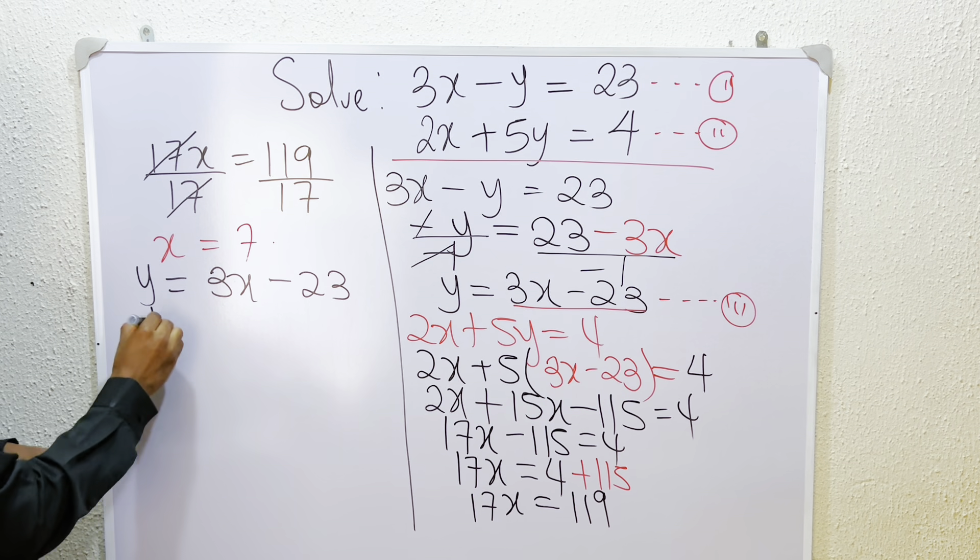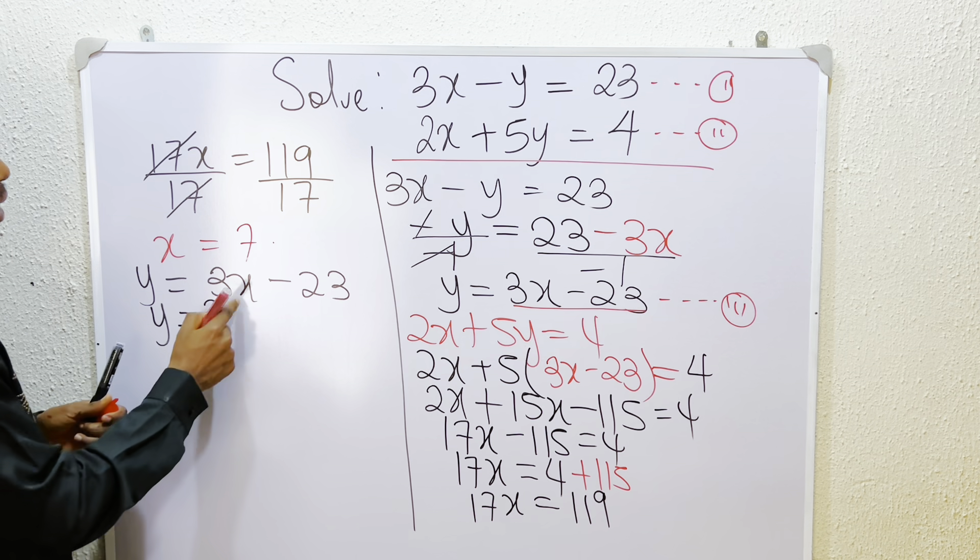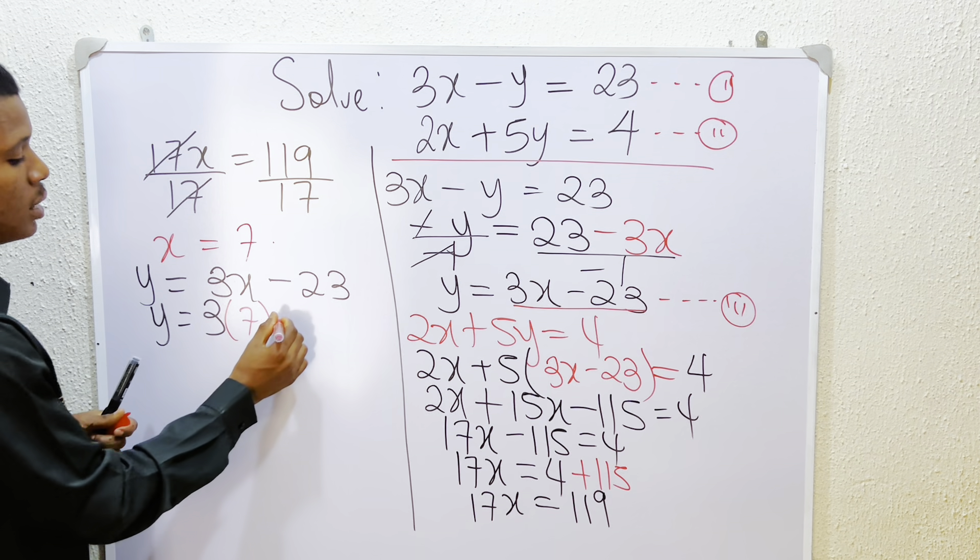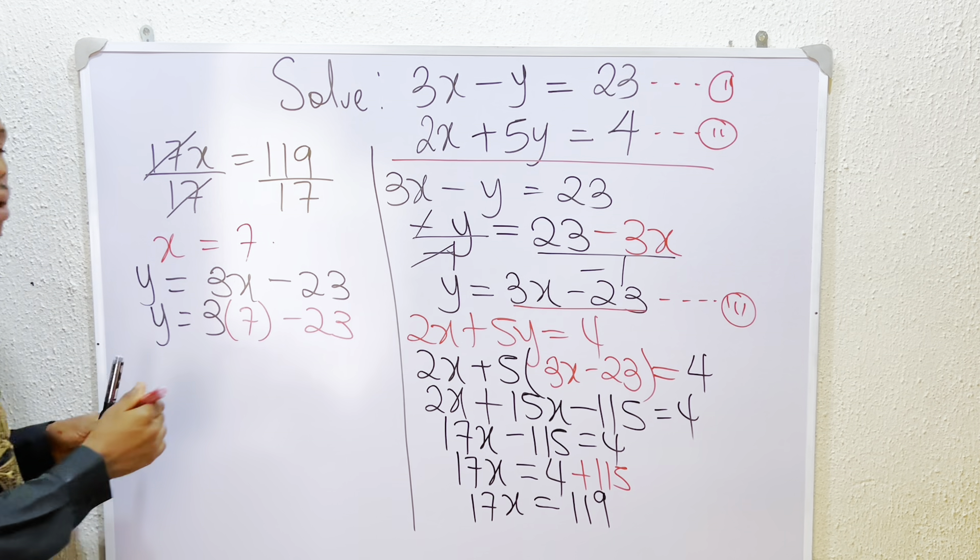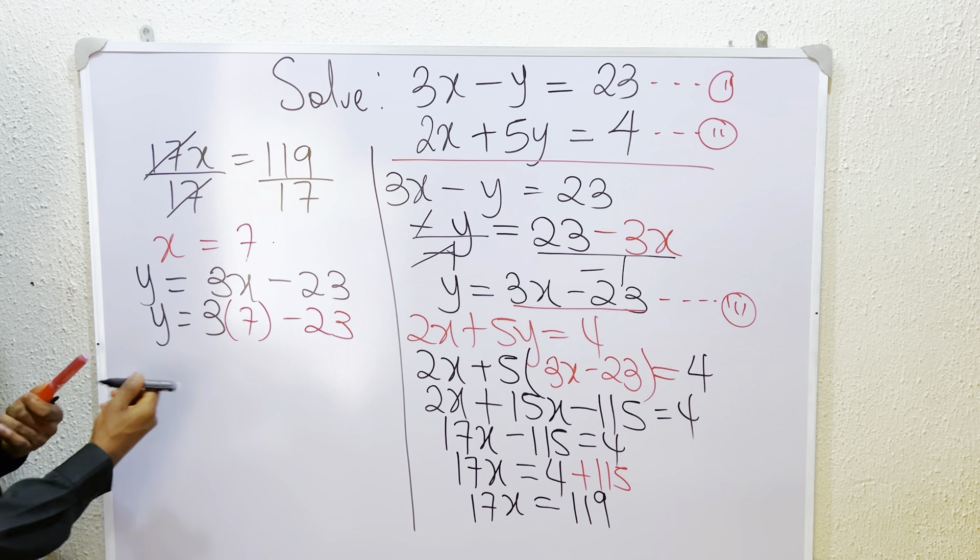So what do we have? That y is equal to 3. So instead of putting x, writing x, we replace it with 7 minus 23. Then 3 times 7 is 21.